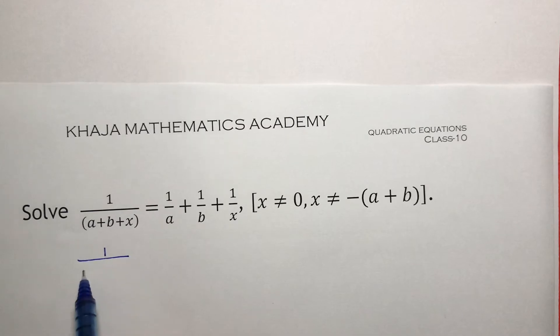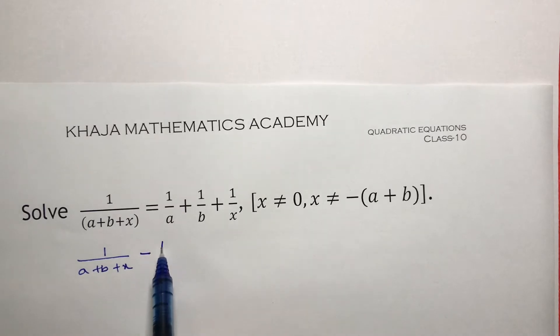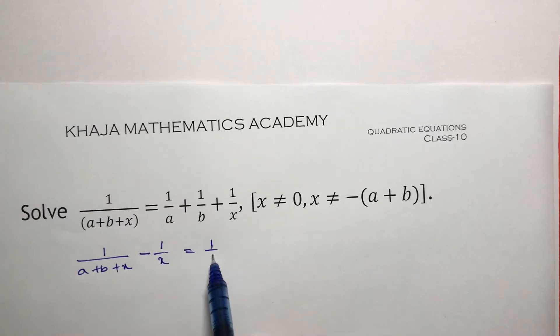Bring 1 by x to the left-hand side. On transposing, it will become minus 1 by x equals 1 by a plus 1 by b.